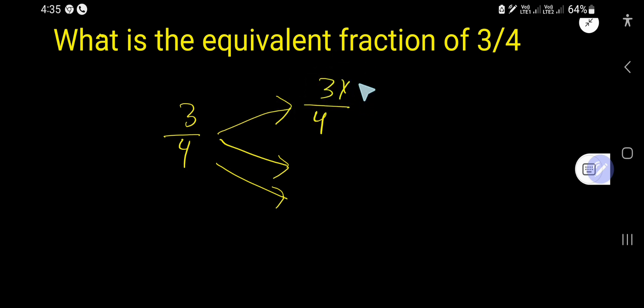You can multiply numerator by 2 and denominator by 2, so you're getting 6/8. 6/8 is the equivalent fraction of 3/4. Now let me multiply by 3. After 2, you can multiply by 3.